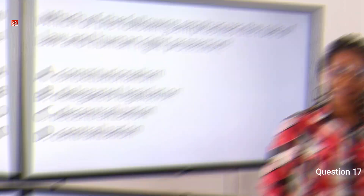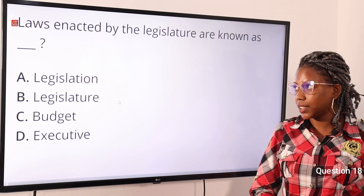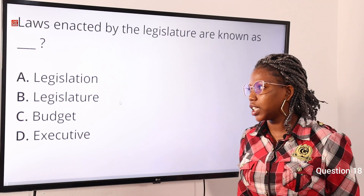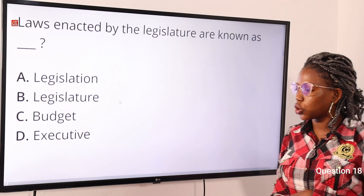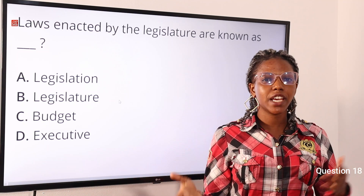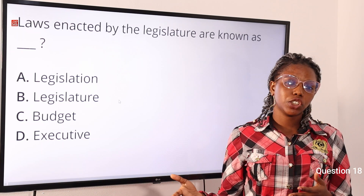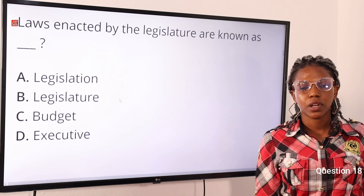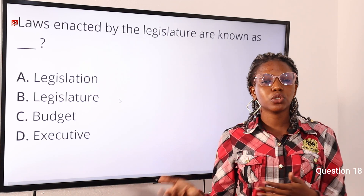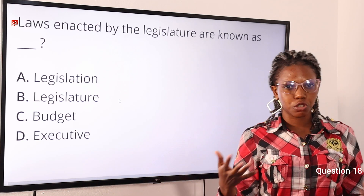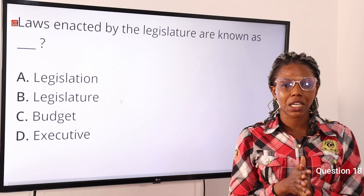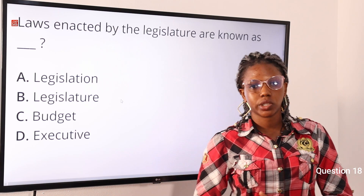Question eighteen: laws enacted by the legislature are known as — option A: legislation, option B: legislature, option C: budgets, option D: executive. The answer is option A, legislation. Legislation describes a law that has been passed by parliament, and also refers to the act of making new laws.